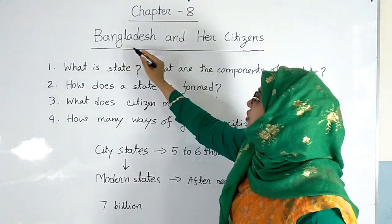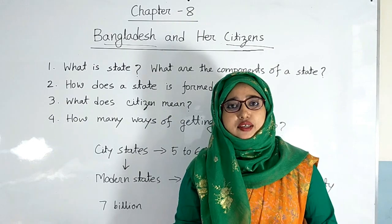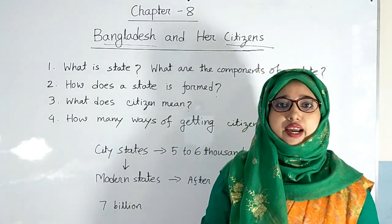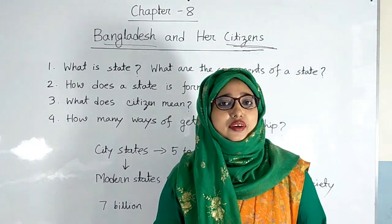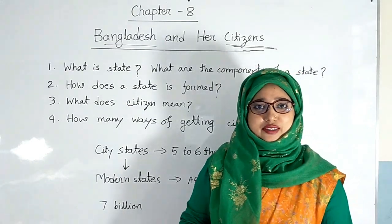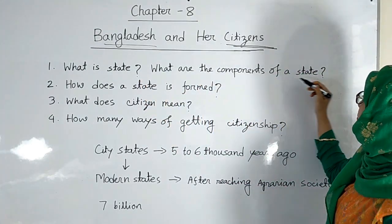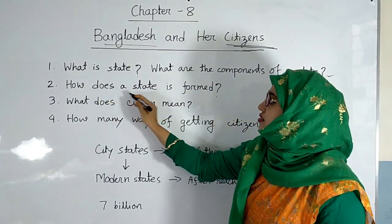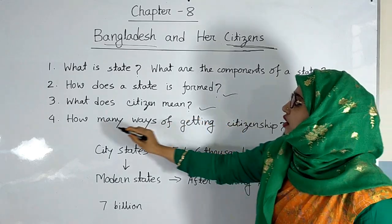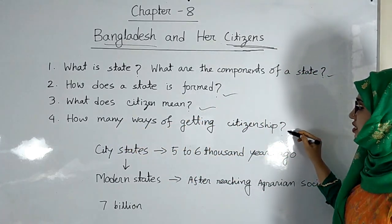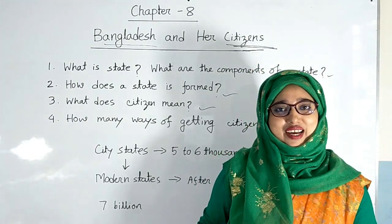We see that there are two key words: Bangladesh and Her Citizens. That means in this class you will have to learn about state and citizen. You know that Bangladesh is a state. After doing the class, you will be able to answer: What is state? What are the components of a state? How is a state formed? What does citizen mean? How many ways are there of getting citizenship? I hope all of you are ready to do the class attentively.